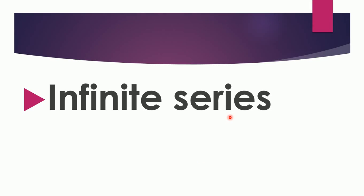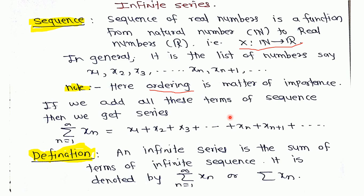In this video I am going to explain infinite series and convergence and divergence of an infinite series. To understand infinite series, it is necessary to understand the meaning of sequences. A sequence of a real number is a function from natural number to real number. In general, we can say it is the list of numbers x1, x2, x3, and so on. The suffix 1, 2, 3 comes from the natural number, and the values of x1, x2, x3 go into the real number.